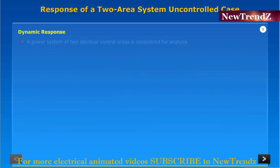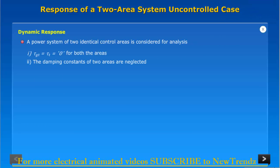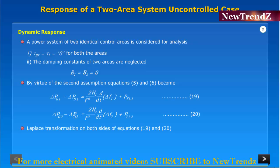Dynamic response: a power system of two identical control areas is considered for analysis. TG equal to TT equal to 0 for both the areas. The damping constants of two areas are neglected, D1 equal to D2 equal to 0. By virtue of the second assumption, equations 5 and 6 become modified. Laplace transformation on both sides of equations 19 and 20.